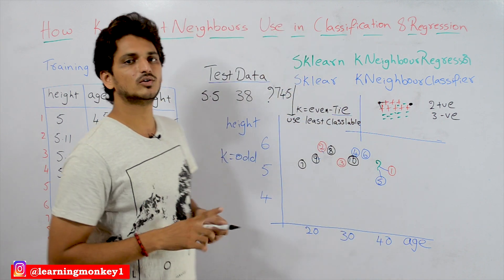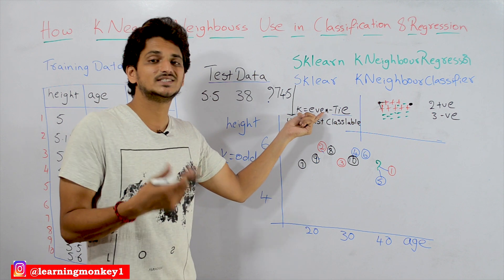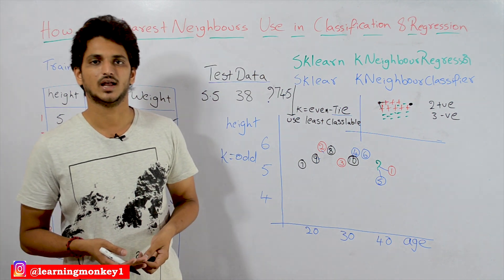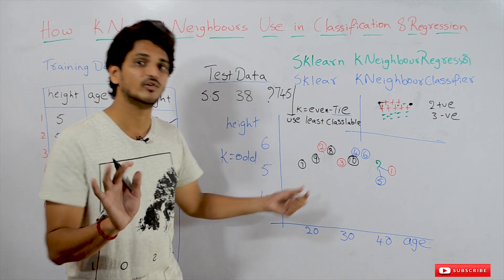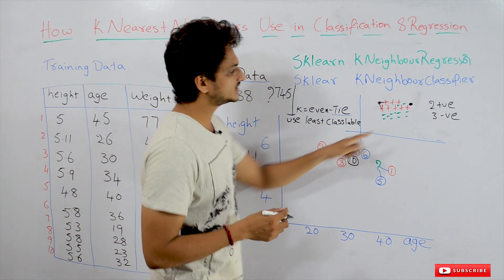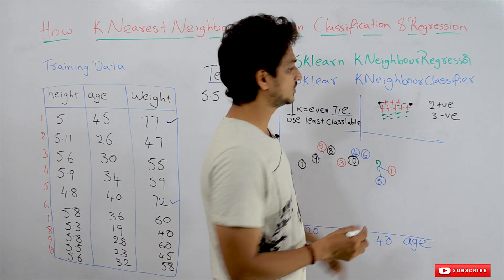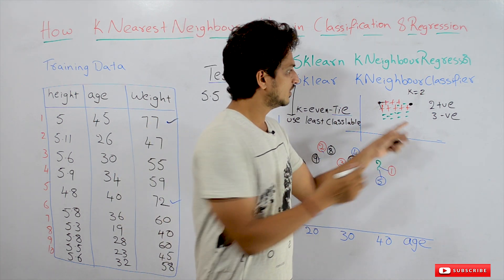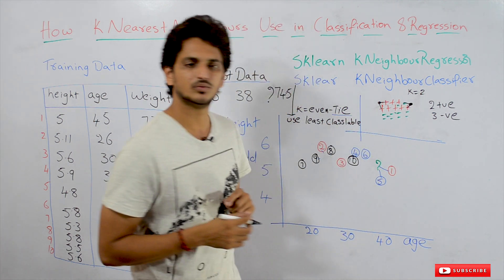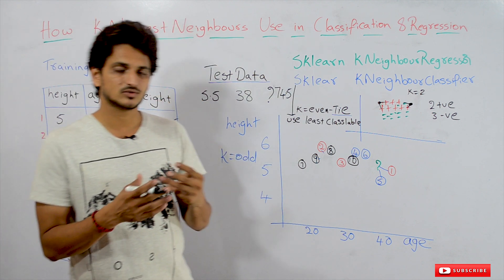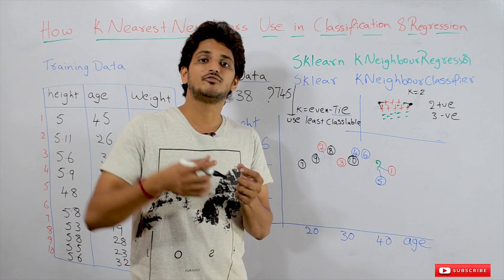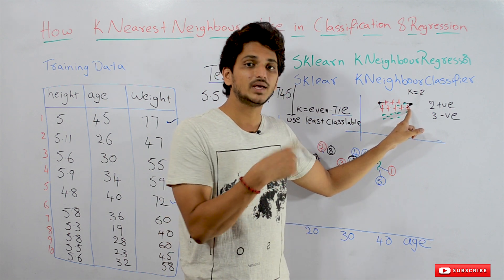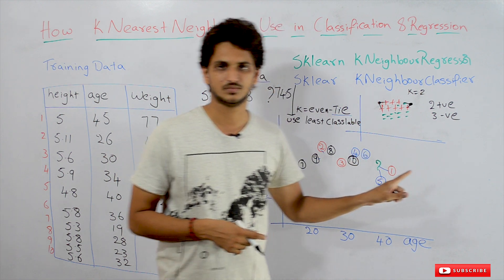Now a common question: what if k is equal to an even number? There is a chance of a tie between positive and negative class. How to deal with this? One way is: if we take k equal to 2 and one neighbor is positive and one is negative, we can use the first nearest neighbor as the predicted value. In this situation, the first nearest neighbor is a positive class, so we pick positive as the predicted value. This is one approach.